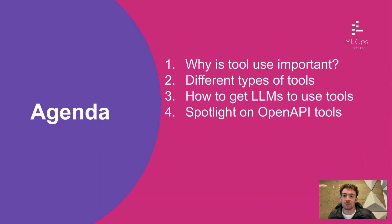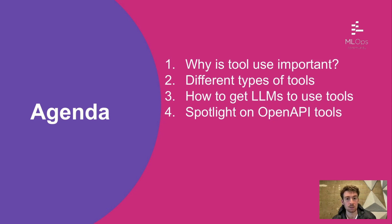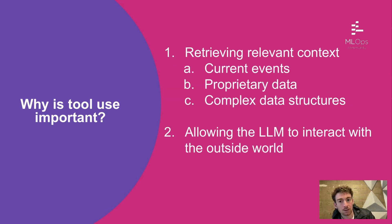I'm going to try to talk in 10 minutes about why tool use is important, different types of tools, then the main chunk will be about how to get language models to use tools, some pitfalls that occur and common fixes for them, and then a little spotlight on some of the OpenAPI tools we've been working on over the past few weeks — largely driven by the AI plugins and ChatGPT plugins announcement.